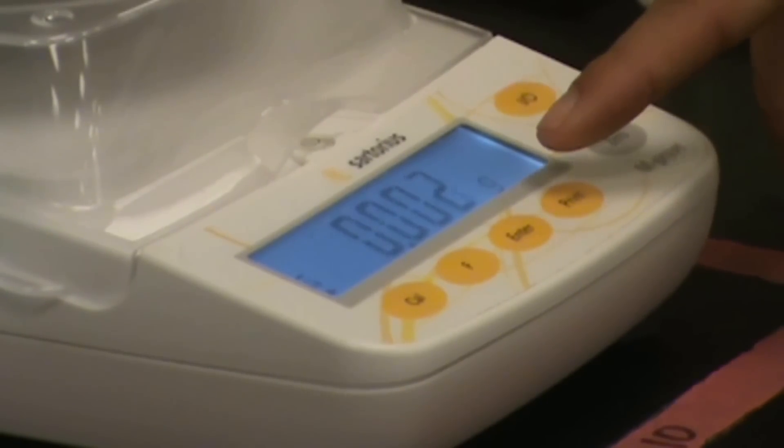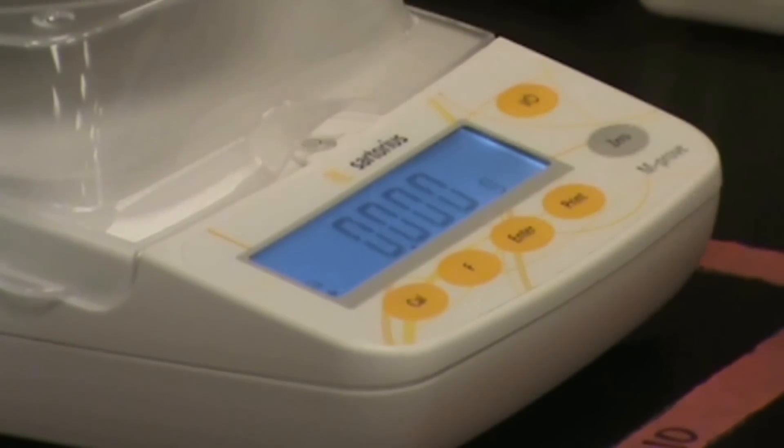One thing you might notice is the last digit or two of mass drifts a little bit due to drafts in the room and vibrations and such. This is perfectly normal. It's not a cause for concern. It's important to remember that grams are very tiny units of mass. So if it drifts by a few hundredths or a few thousandths of a gram, it's not going to cause a significant amount of error.